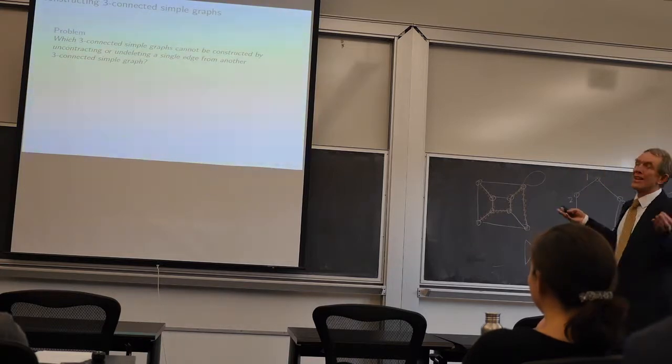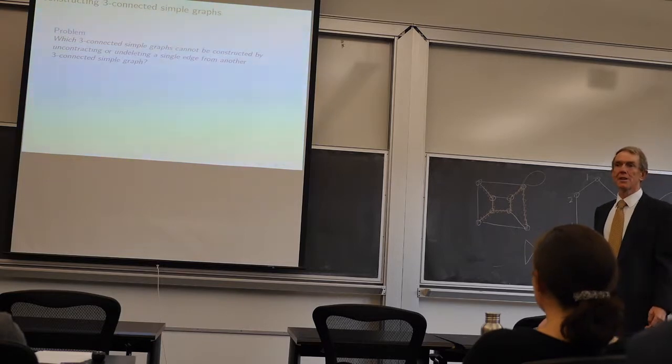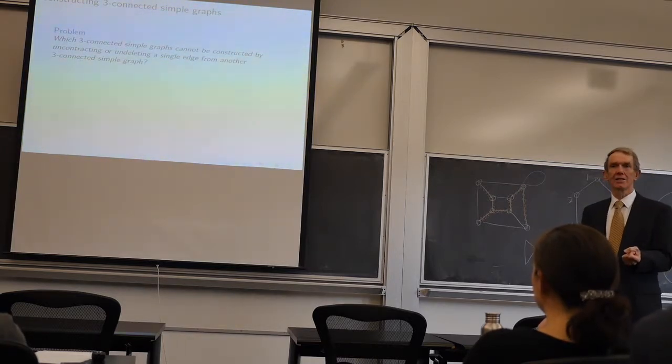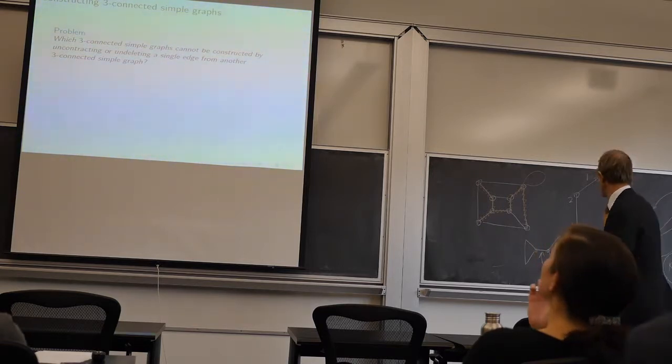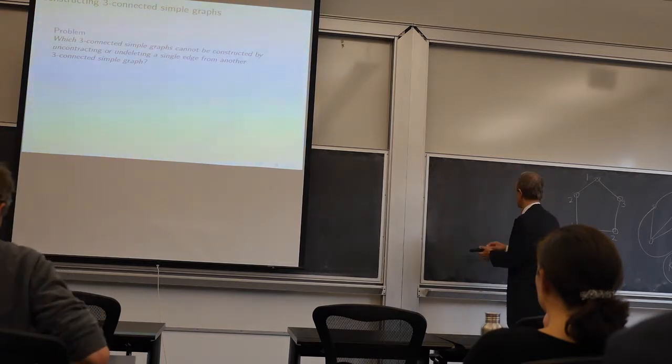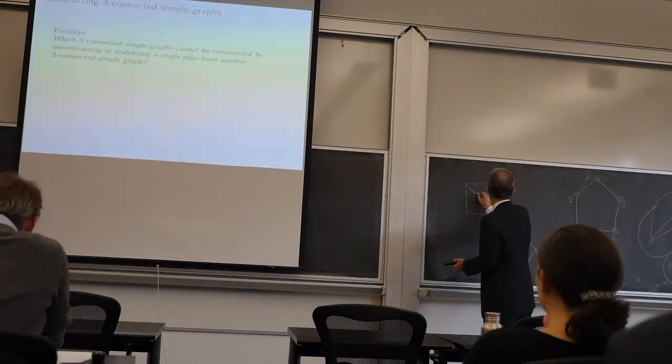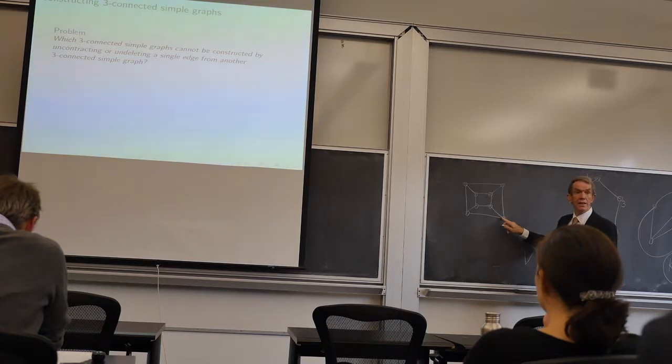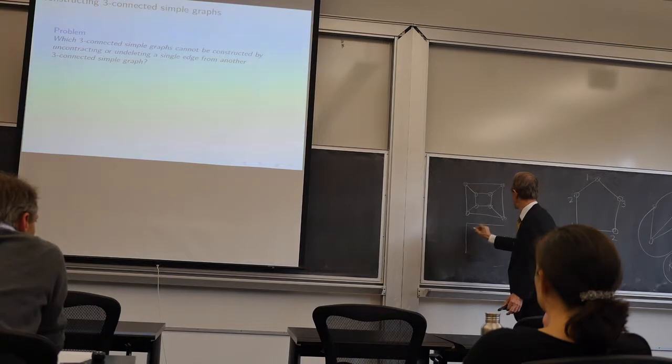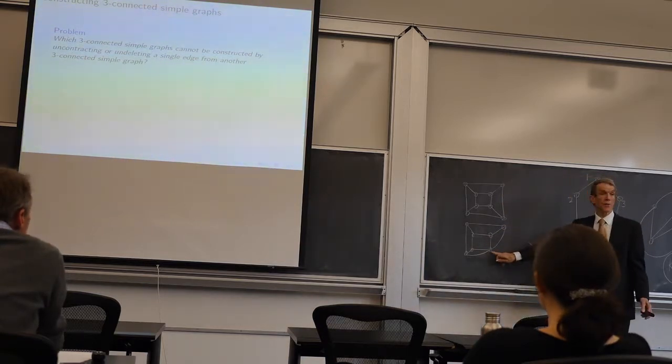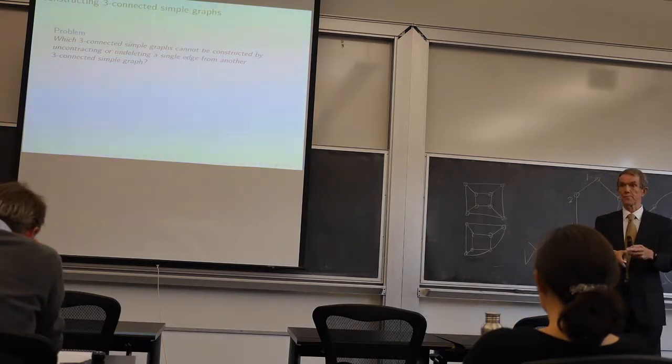And you don't really want to know about matroids. Look at Carolyn. Matroids are a struggle. You don't want to go there. We've got a three-connected simple graph. And I want to know which one can't be built from a smaller three-connected simple graph by uncontracting or undeleting a single edge. And we want to contract this edge here. That's going to shrink it down.